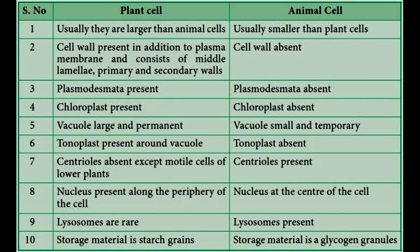In plant cell, nucleus is present along the periphery of the cell. In plant cell, lysosomes are rare. In animal cells, lysosomes are present and abundant.